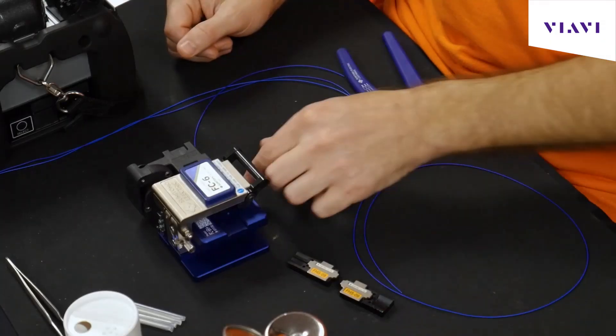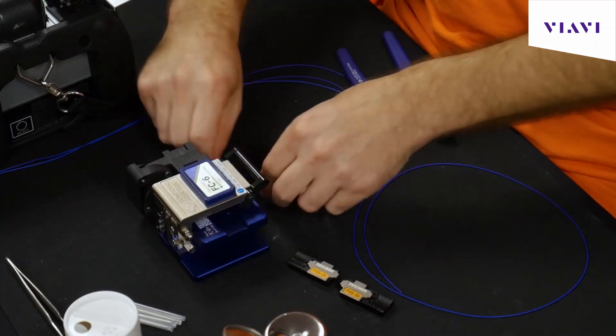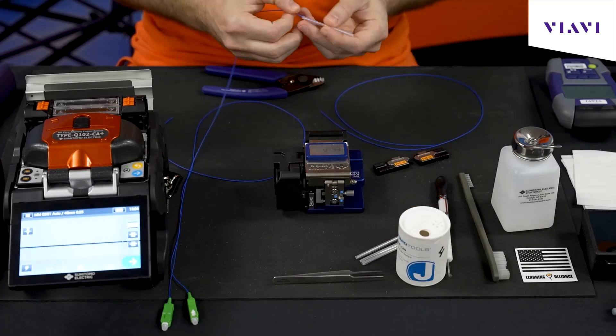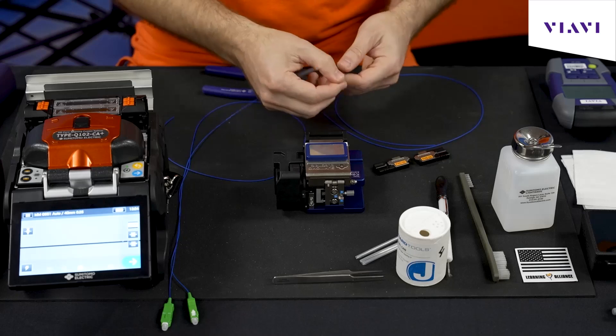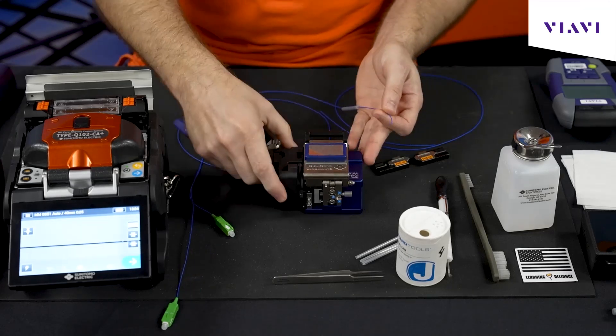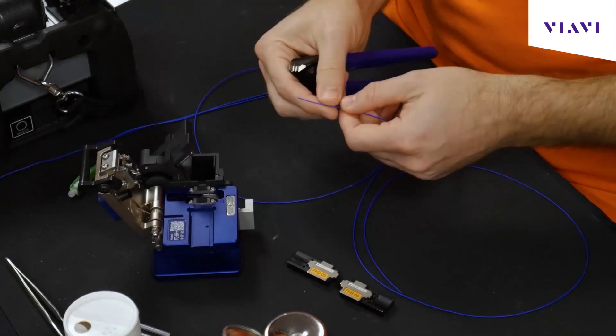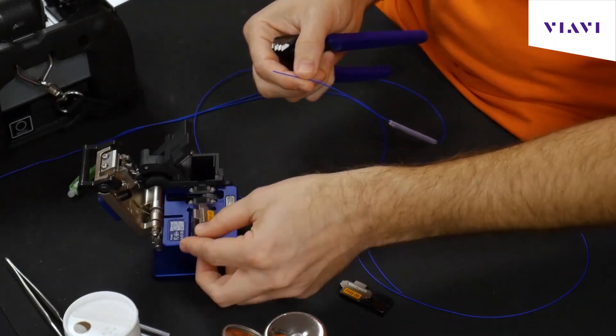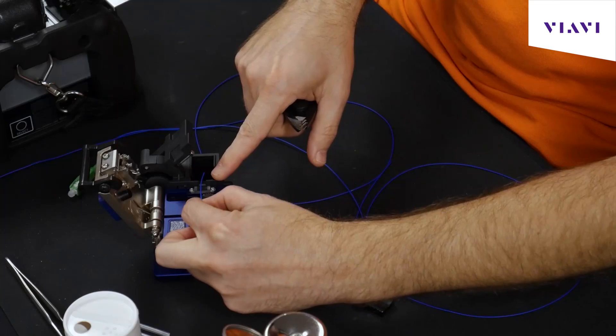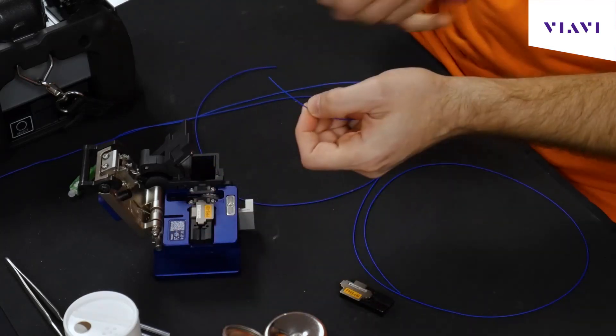To start our splice, I'm going to take one end of my pigtail, make sure I get my heat shrink tubing on there. I'm going to begin to cleave it back using our Sumatumo cleaver here. I have these inserts and know how far I need to cleave, so I just need to make sure that I got enough glass to reach this catching house.